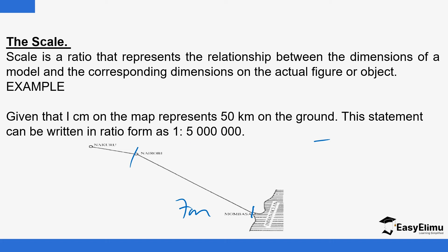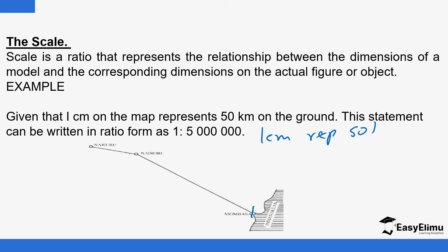When given in ratio form, such as 1:5,000,000, that means one centimeter on the map represents five million centimeters on the actual ground. When writing a ratio, the units must be the same on both sides — centimeters to centimeters. So in representative scale you state units, but in ratio form the units cancel out. To convert, we take the 50 kilometers and convert it into centimeters.